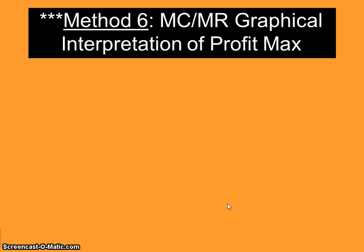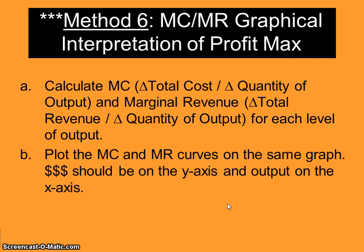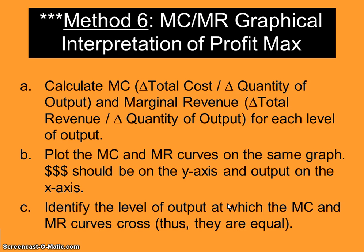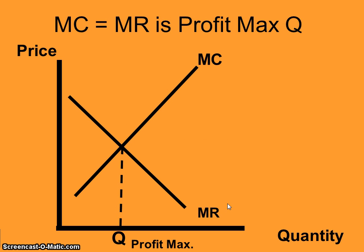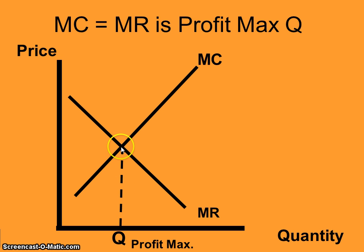Method five is the marginal cost and marginal revenue graphical approach, where you plot the MC and MR curves on the same graph and identify where they are equal or where they cross. The marginal cost curve is like a checkmark or Nike swoosh, but we're only concerned with the upward-sloping portion. The profit-maximizing quantity is where they cross. If they cross at a non-whole number, you backtrack to the smaller number, because you want revenue greater than cost rather than moving forward where MC exceeds MR.